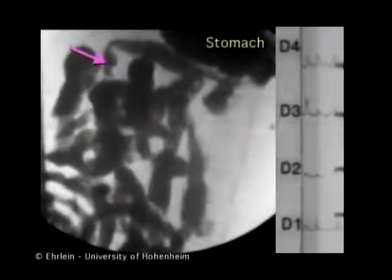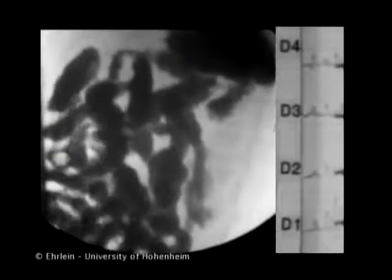Once again, backflow. Gastric emptying with rapid peristaltic waves follows. The jejunum contains large amounts of gas. You can imagine that this motor pattern does not improve intestinal absorption.